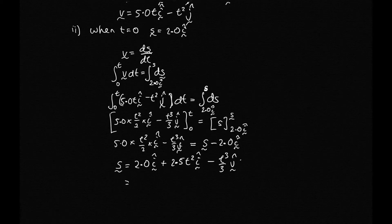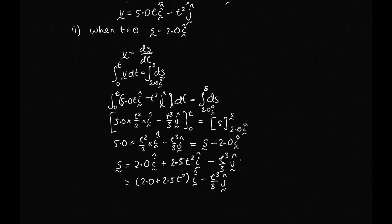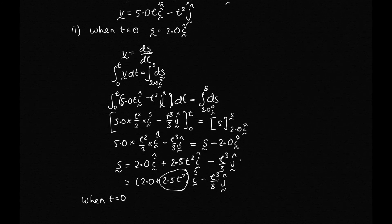Just to check: when t = 0, the 2.5t² term is 0 and the t³/3 term is also 0, so we end up with s = 2.0i, which matches our initial condition. This confirms we've used the limits on the integral correctly.